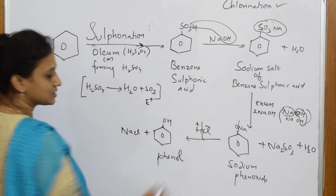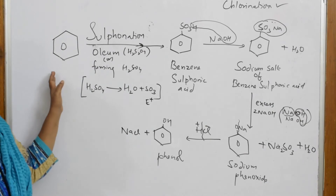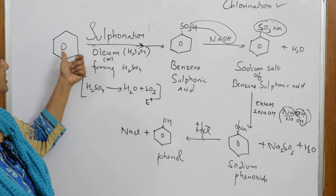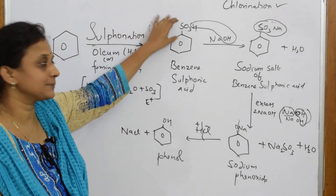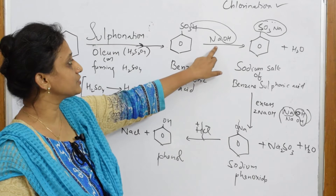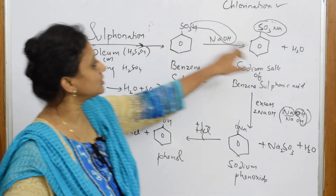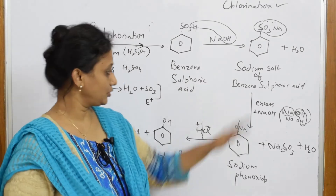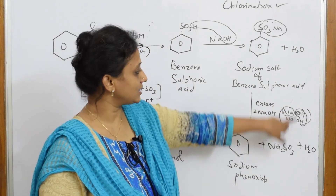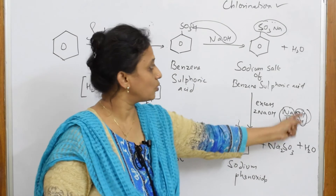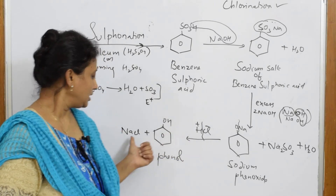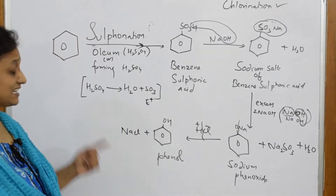Once sodium phenoxide is obtained via the sulfonation route, acidify with HCl. NaCl comes out and phenol is prepared. Summary for Preparation 2: benzene → sulfonation with SO₃ electrophile → benzene sulfonic acid → fuse NaOH (water out, SO₃Na formed) → excess NaOH (Na₂SO₃ and H₂O out, sodium phenoxide formed) → acidify with HCl → phenol.